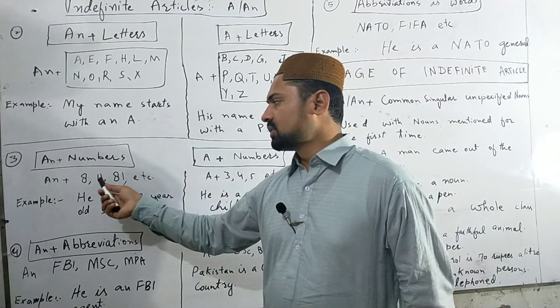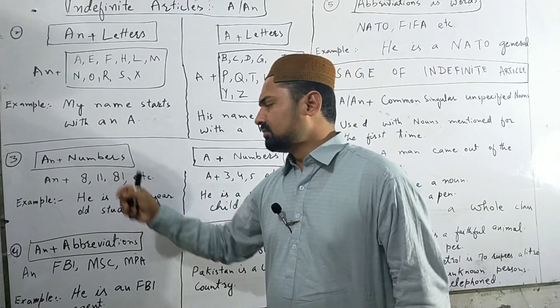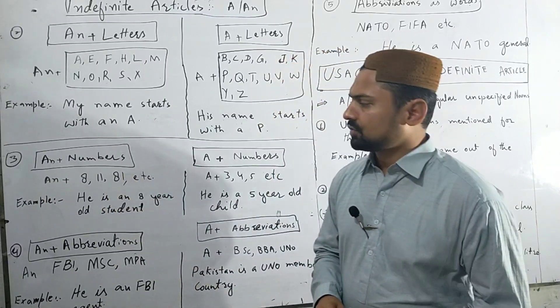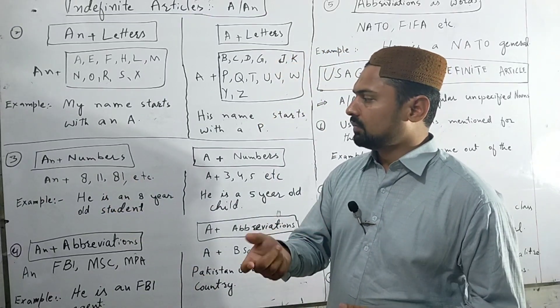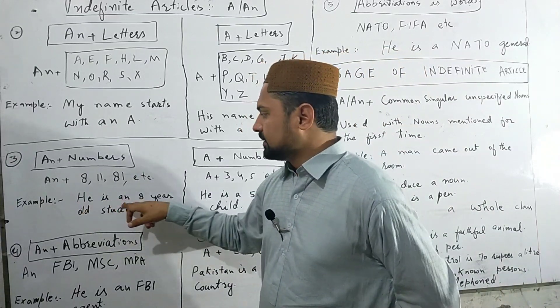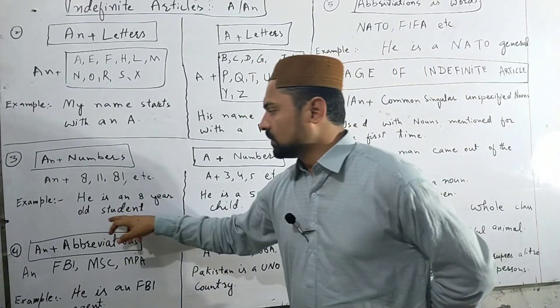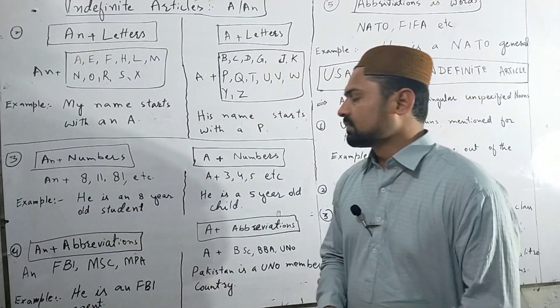For example, numbers like 8, 11, and 81 start with a vowel sound. So we say: he is AN 8-year-old student.